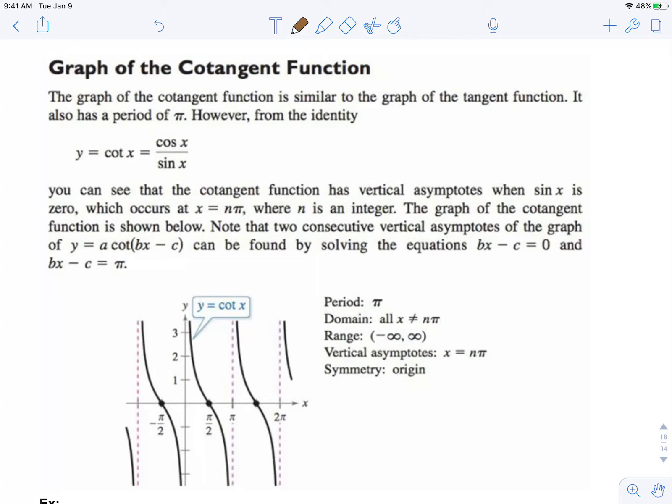So the graph of cotangent is very similar to the graph of tangent. However, we use this identity: cotangent is cosine over sine, which means that vertical asymptotes occur when sine x equals zero.